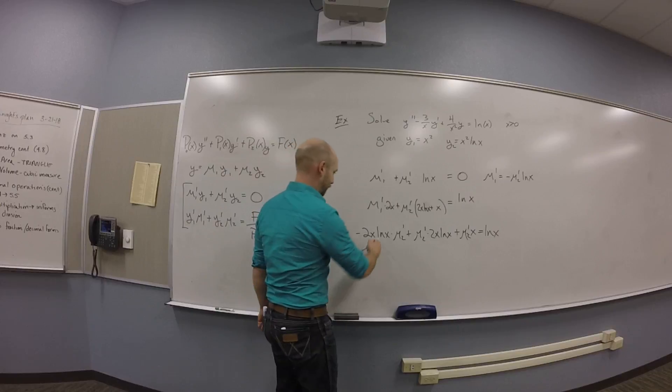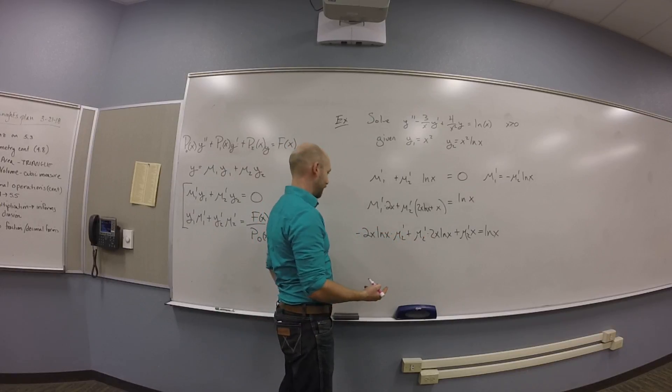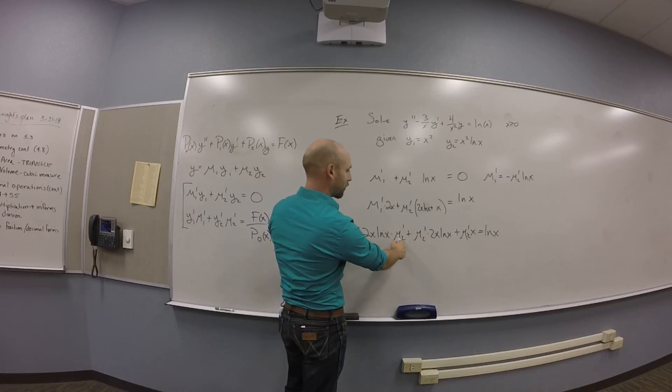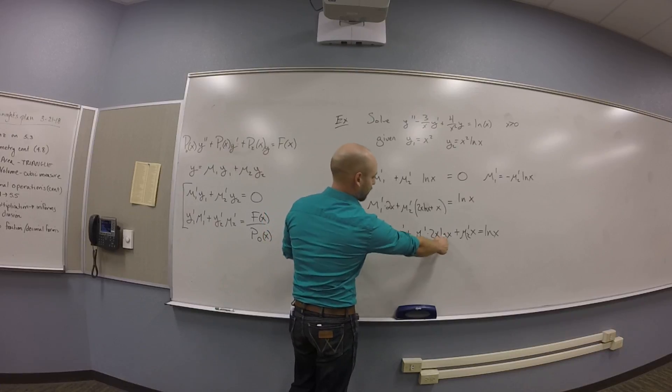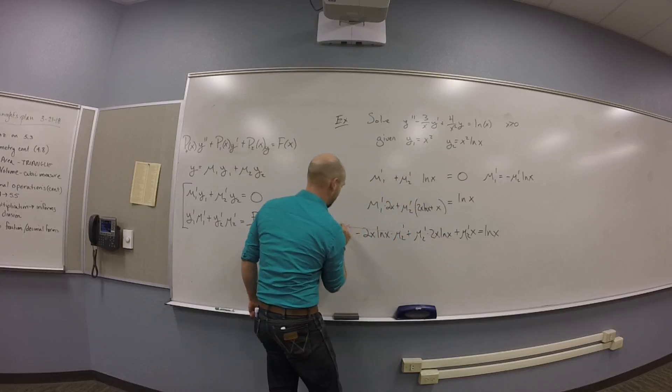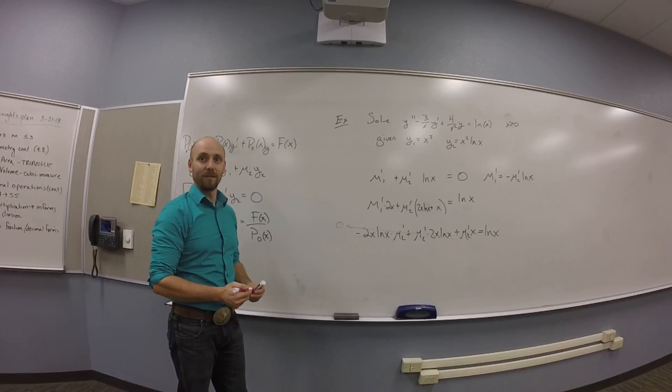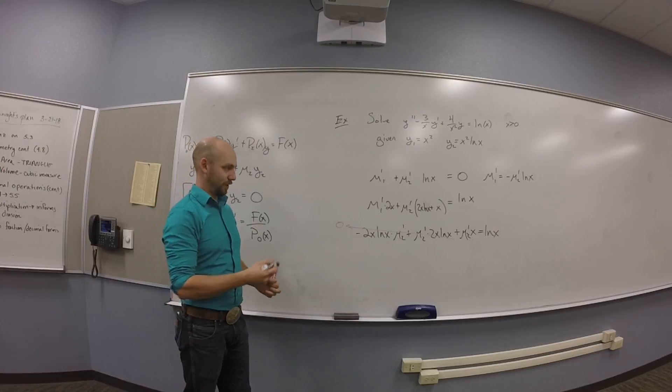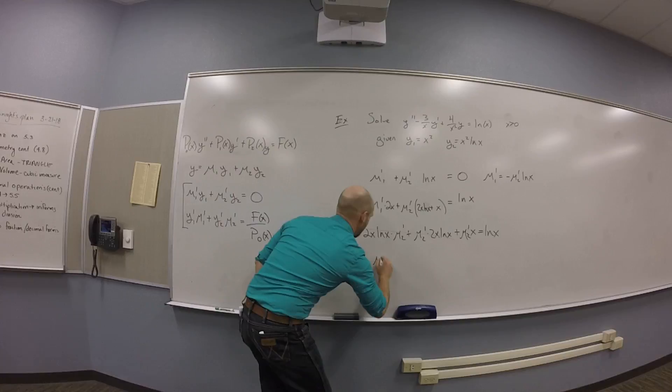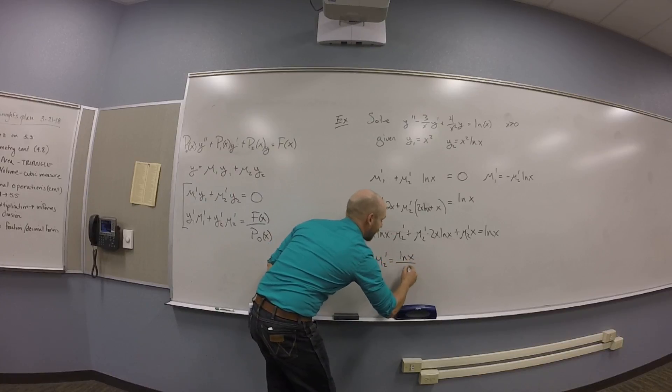There's, yeah, plus or minus. That thing and that thing are opposites, right? Yeah. Like, there's a minus 2X log X mu2 prime and 2X log X mu2 prime. So, that whole part zeroes out. And you are left with mu2 prime is log of X over X.